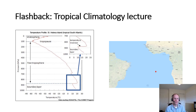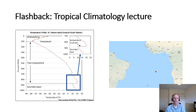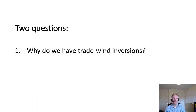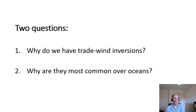So what ultimately gives rise to this inversion structure? This sounding over the tropical South Atlantic is characteristic of where we're looking for these trade wind inversions — primarily over the open oceans. We'll give particular focus to the eastern North Pacific where we have the most data available. This allows us to ask and hopefully answer two questions: one, why do we have trade wind inversions — what gives rise to that rapid increase in temperature and rapid decrease in dew point with increasing height? And two, why are they most common over the open oceans, particularly during the summertime months?